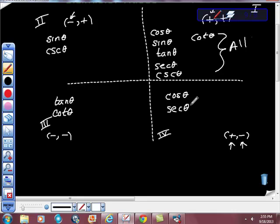There's this stupid little acronym that has been used for a long time. And it is all a smart trig class. All a smart trig class. And if you're like, well, what about these other angles? This is reciprocal to this. This goes with this. This goes with this, doesn't it?